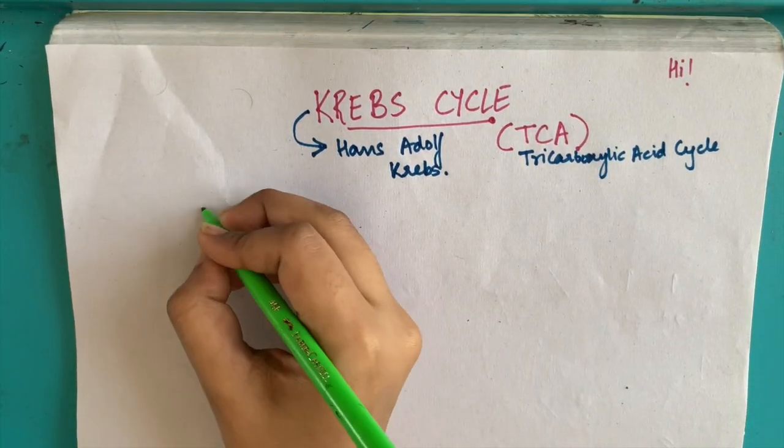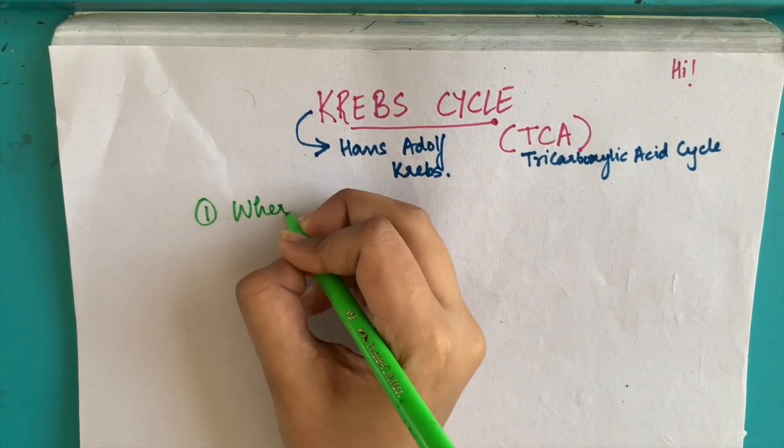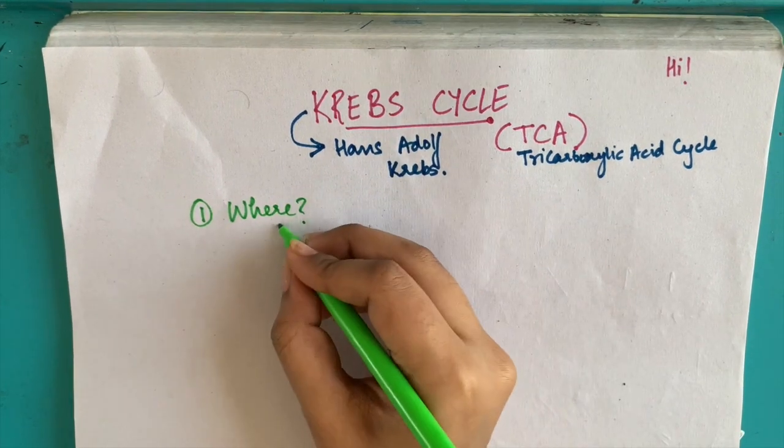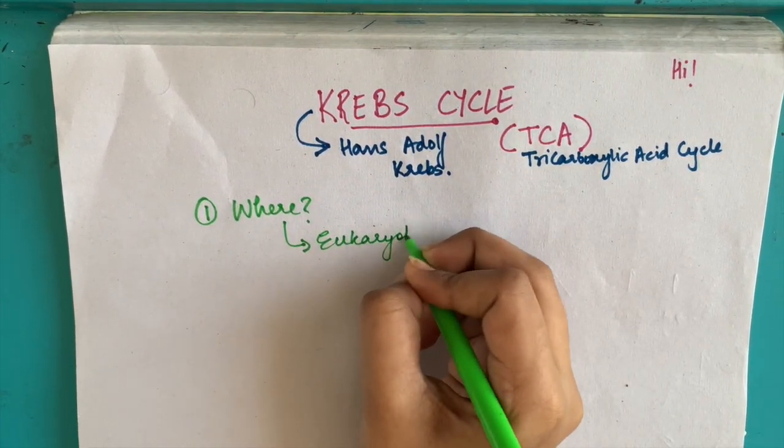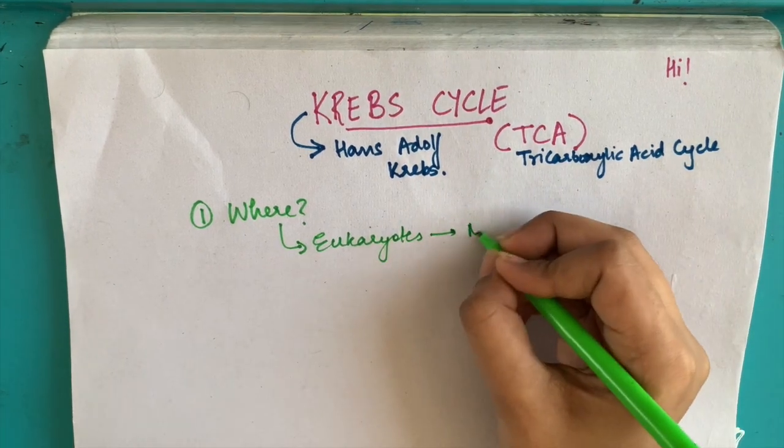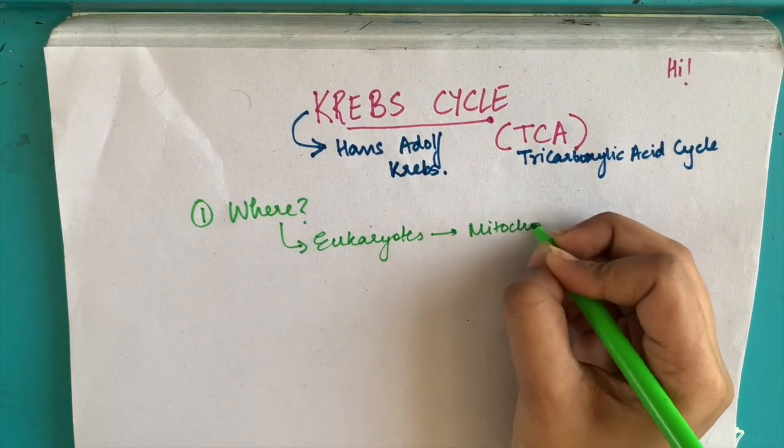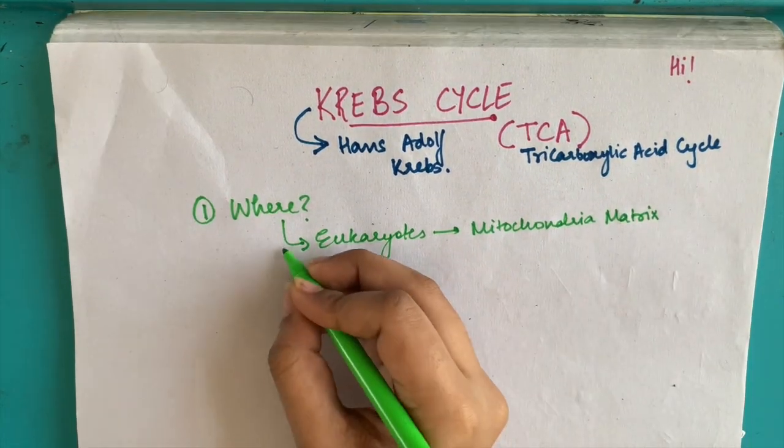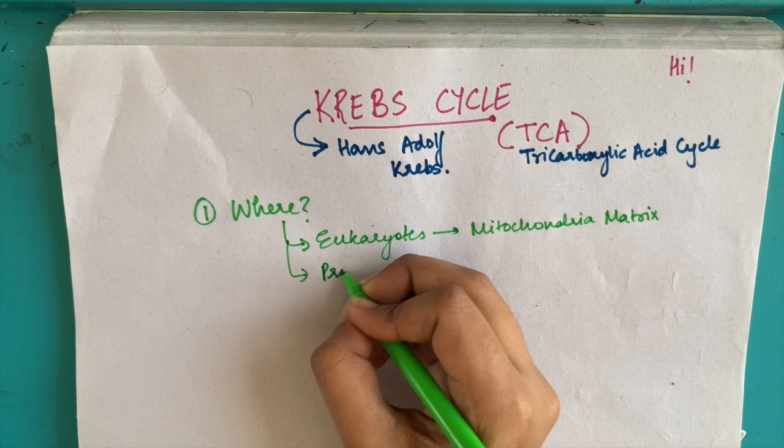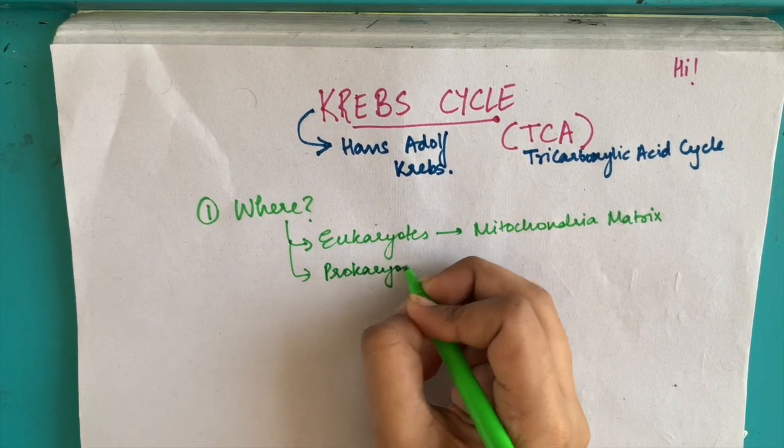Let us talk about where Krebs cycle exactly takes place. In eukaryotic organisms, Krebs cycle takes place in the matrix of the mitochondria, in the inner membrane of the mitochondria. But since prokaryotes do not have mitochondria, the process takes place in the cytoplasm itself.